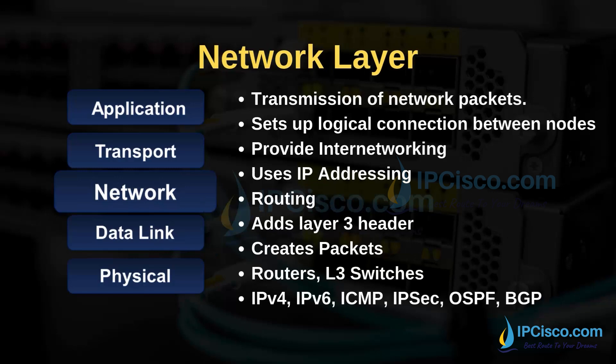The third layer of the TCP/IP model is the network layer. The main duty of this layer is transmission of network packets from source to destination. This layer sets up logical connections between nodes. Logical addressing and IP addresses are used in the network layer. It provides internetworking, and routing is also done in this layer. Network layer adds a layer 3 header and creates packets. The devices used in this layer are routers and layer 3 switches.